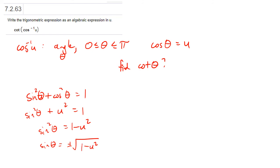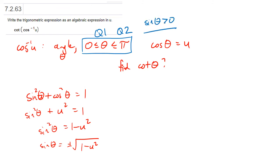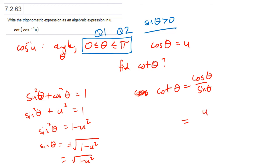The question becomes: do I want the positive or the negative root? Remember arc cosine specifically gives us angles either in quadrant 1 or quadrant 2, and in those two quadrants the sine is positive. Which means even though I don't know what u is, I want the positive root of 1 minus u squared — that's the sine of theta. And finally, the cotangent of theta is cosine theta over sine theta. Cosine theta was given as u, and the sine of theta we just found is the square root of 1 minus u squared. So that's the cotangent of theta, and remember theta was the arc cosine of u.